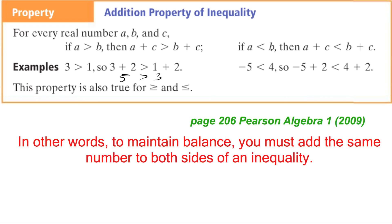If a is less than b, then a plus c is going to be less than b plus c. For example, negative 5 is less than 4. If we add 2 to both sides, negative 5 plus 2 gives negative 3, and that is less than 6. We can see that when we add to both sides of an inequality, whether greater than or less than, we end up with a true inequality. This property is also true for greater than or equal to and less than or equal to.